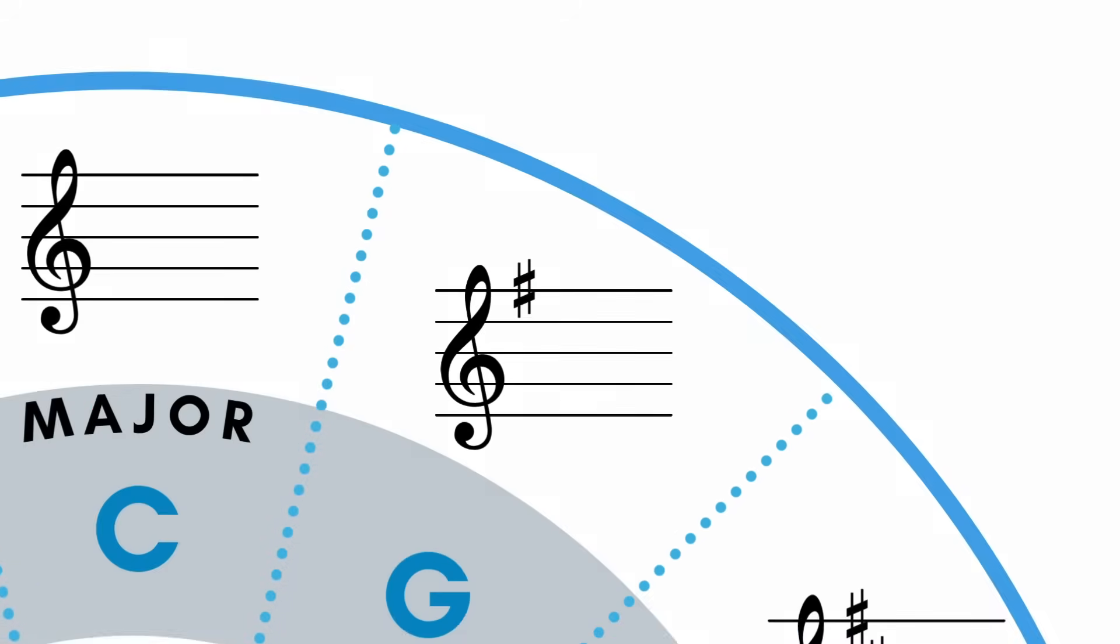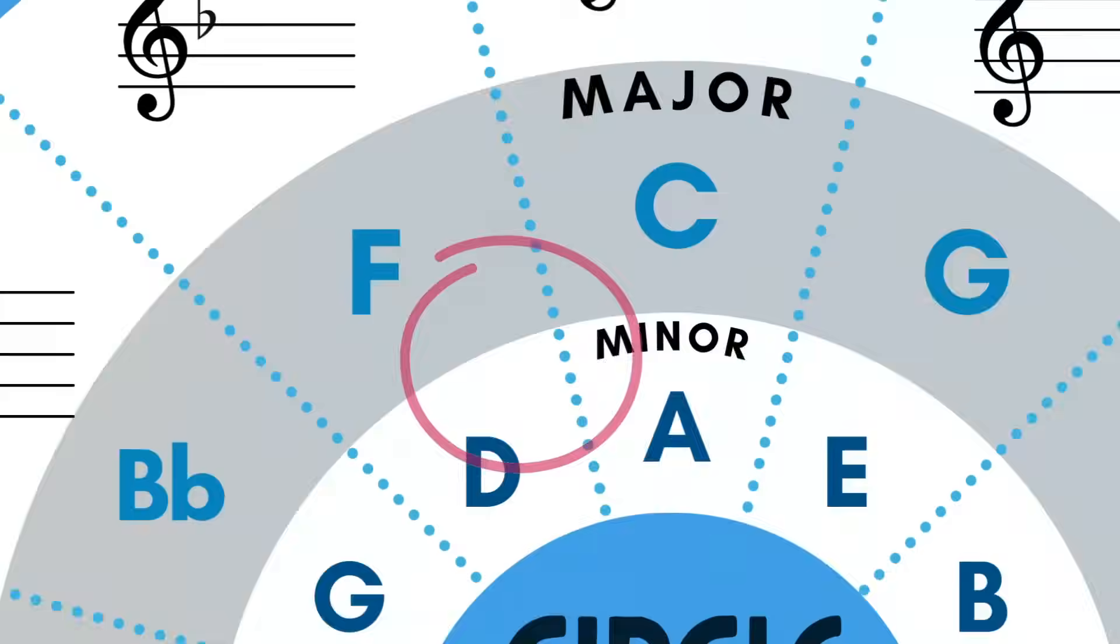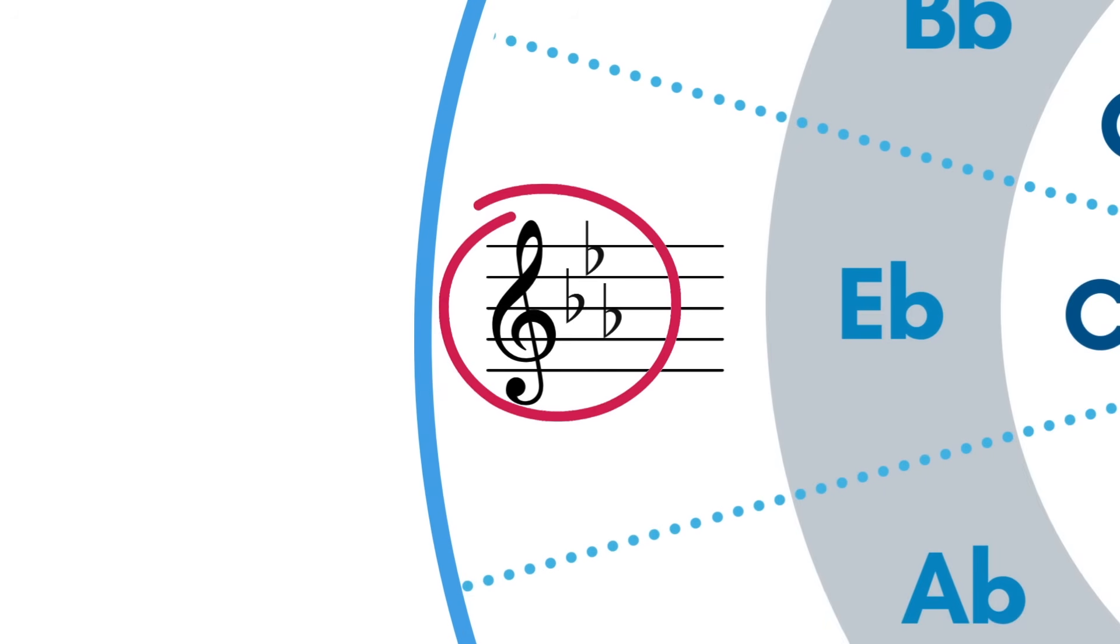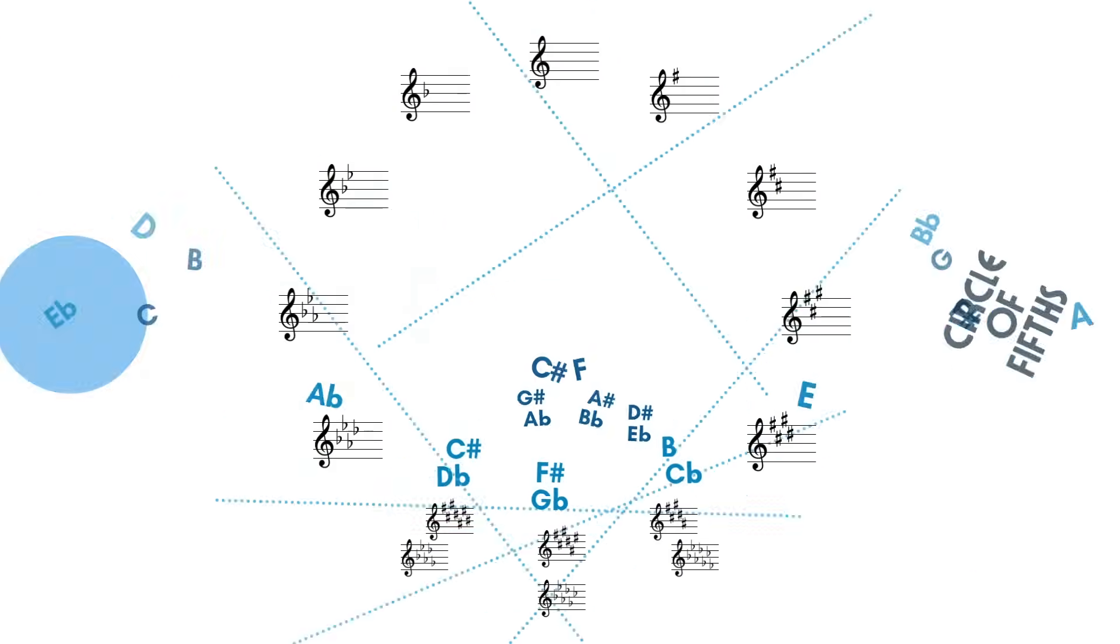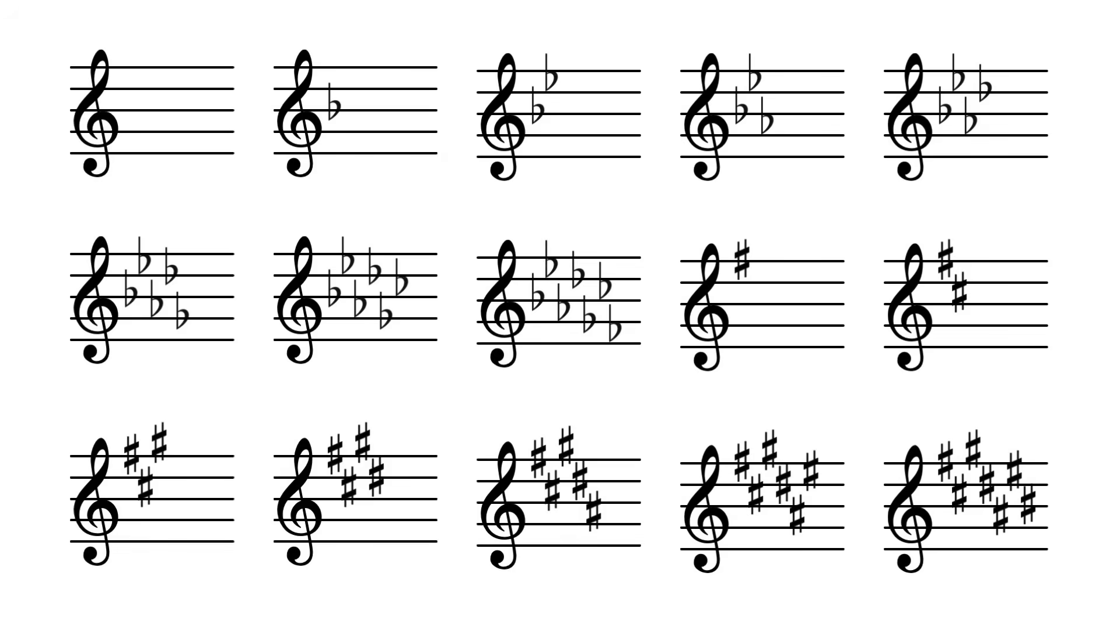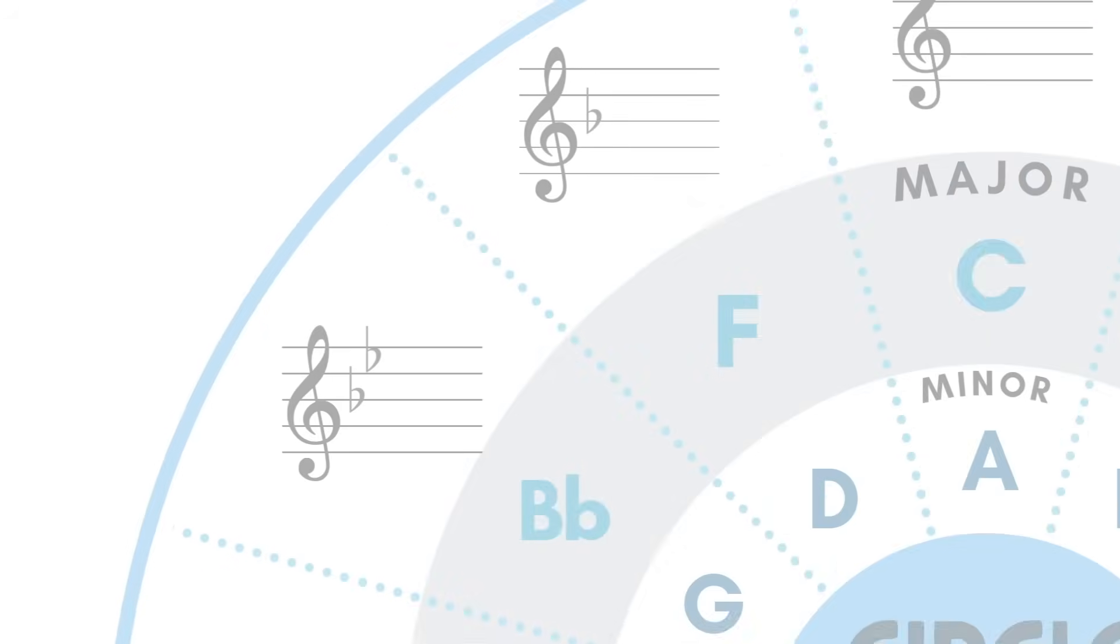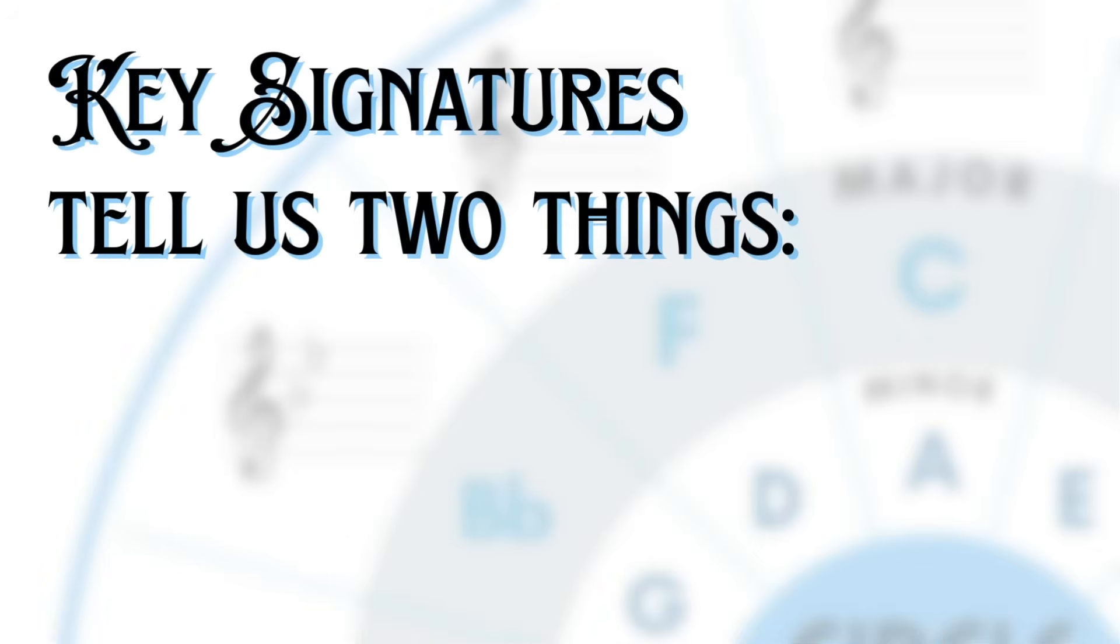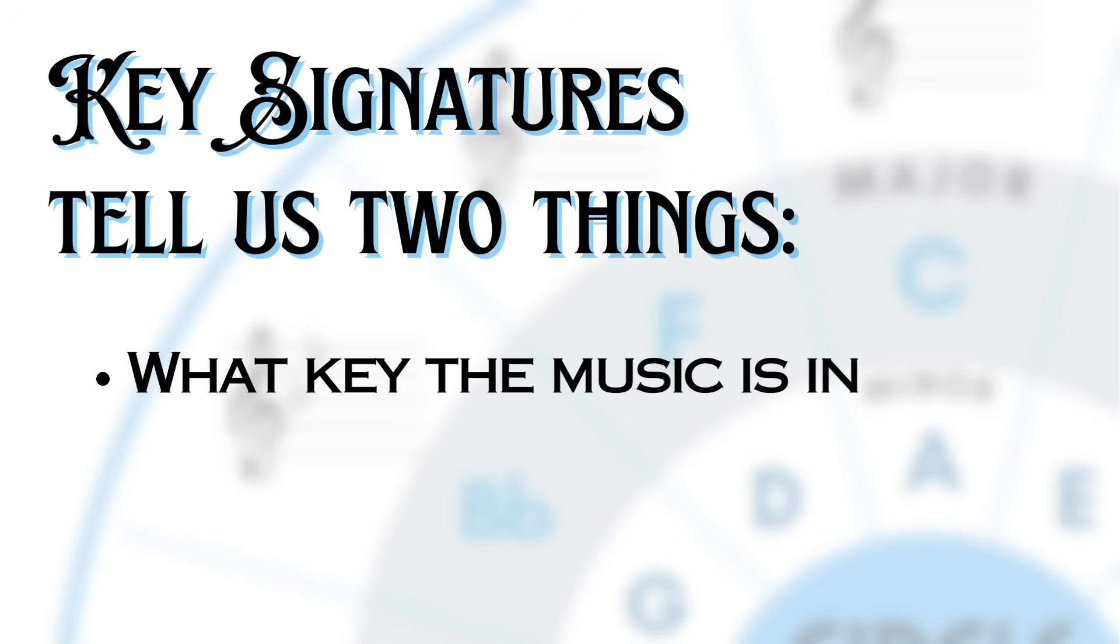This is a key signature, and these are all of the key signatures. The key signature tells us two things: what key is the piece of music in, and what notes are flat or sharp within that key.